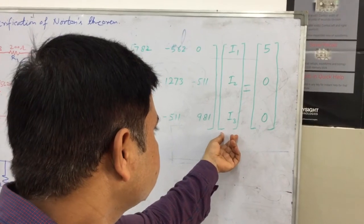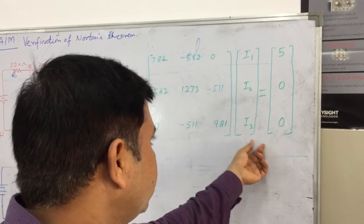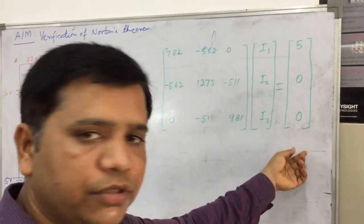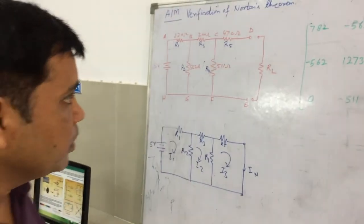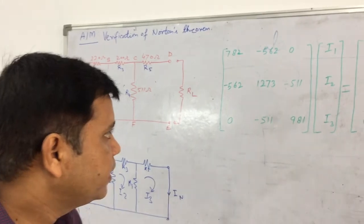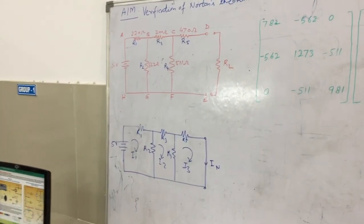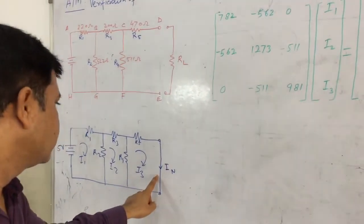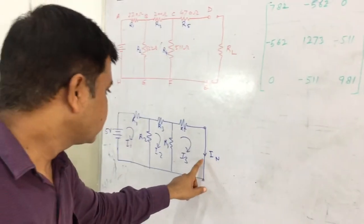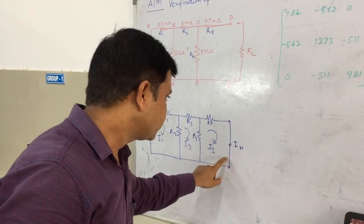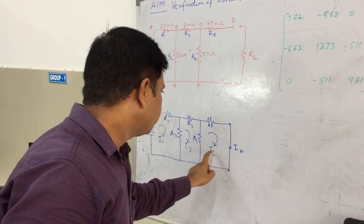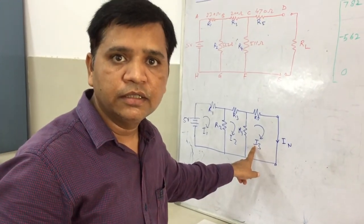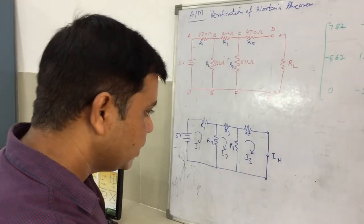The column matrix contains the unknowns I1, I2, and I3, and the energy source equivalent column matrix is 500. With the help of Cramer's rule, we can easily find out I1, I2, and I3. This I3 gives the Norton equivalent current, since In is equal to I3 — this branch current equals I3, which gives the equivalent Norton current source.